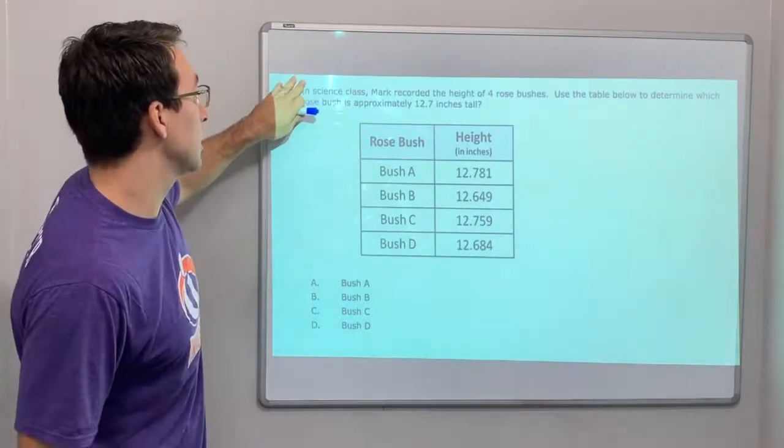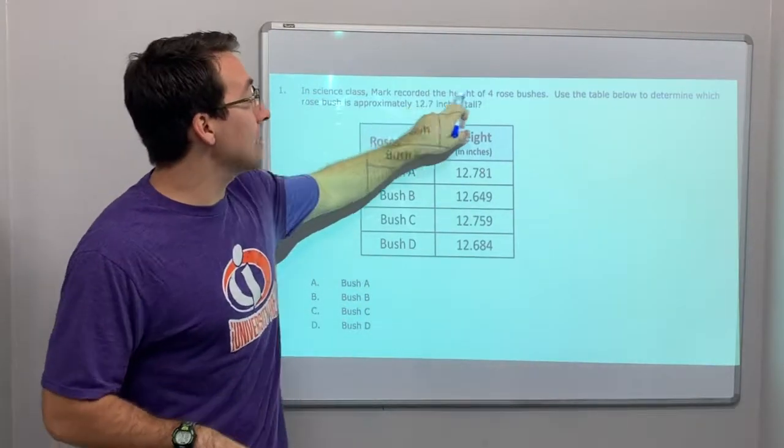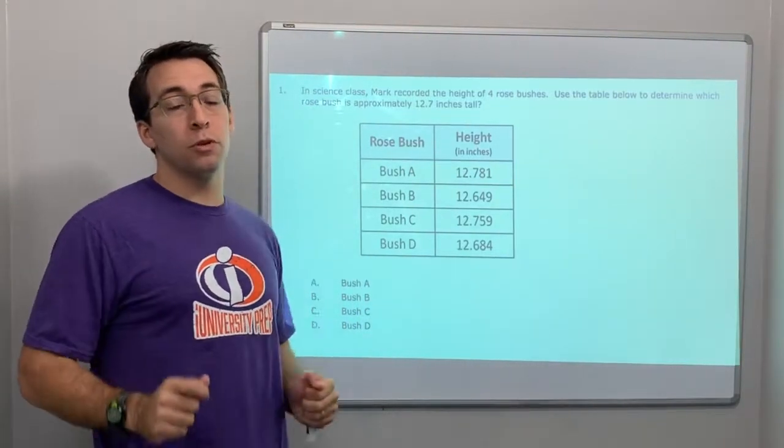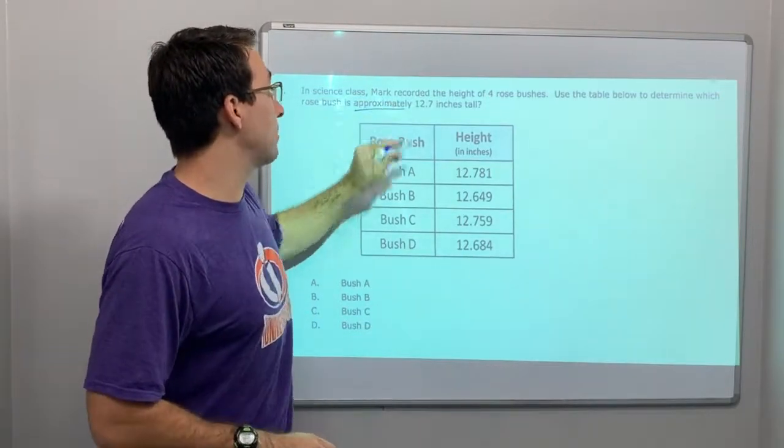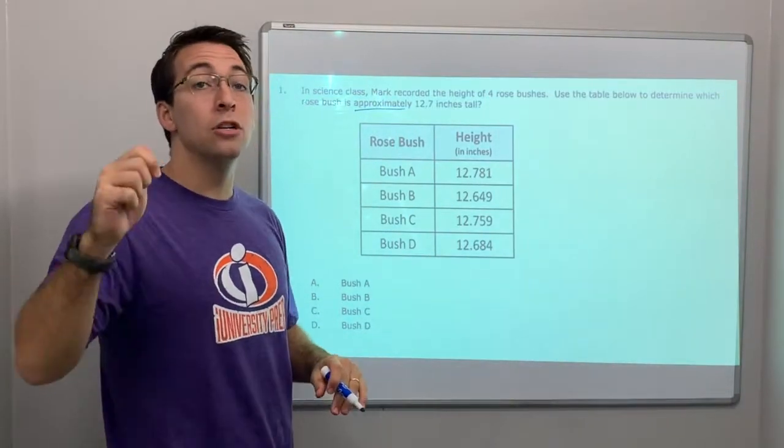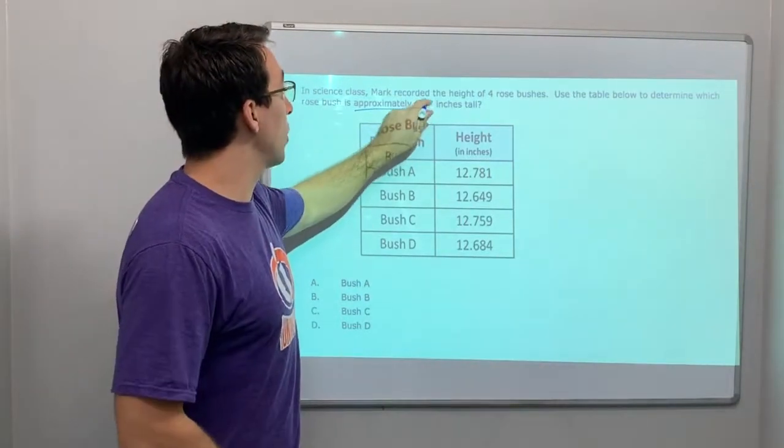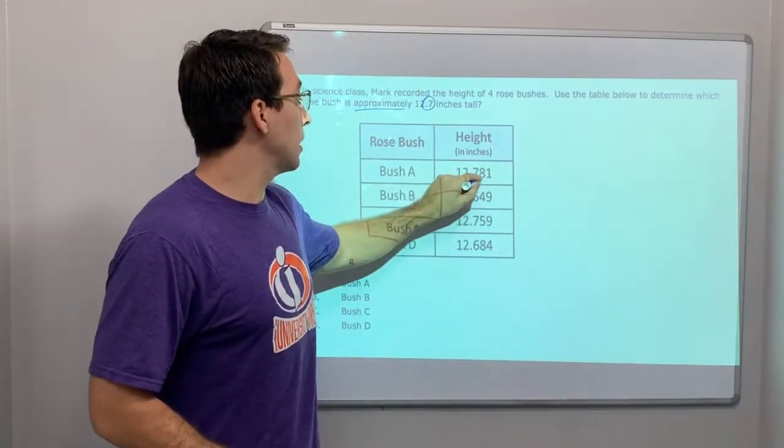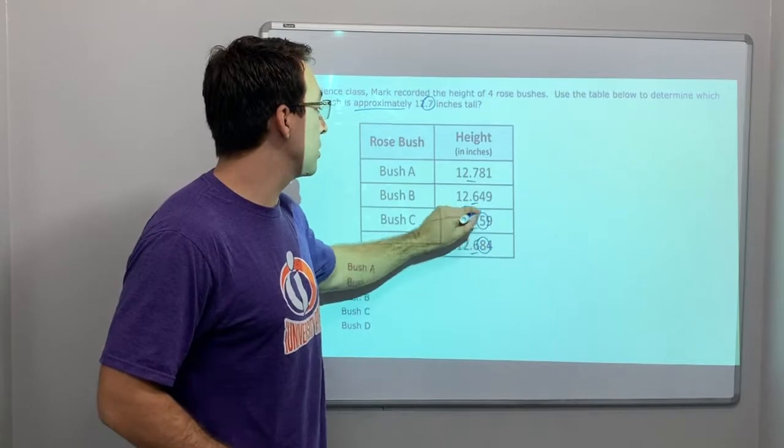So, a few questions. Let's look at this. In science class, Mark recorded the height of four rose bushes. Use the table below to determine which rose bush is approximately, there's a rounding vocabulary, approximately 12.7 inches tall. So, notice, 12 and 7 tenths. It's the tenths place. So, we need to, let's underline the tenths place in each. And we're going to circle the digit to the right.